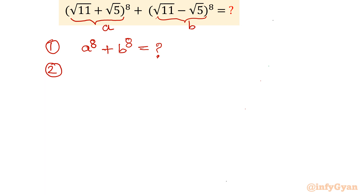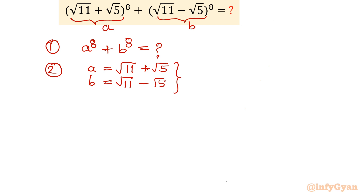What do we know? a = √11 + √5, and b = √11 − √5. If we add both equations, a + b comes out to 2√11, since the √5 terms cancel out. This equation is important.